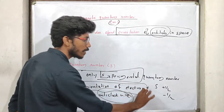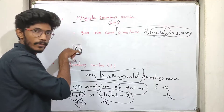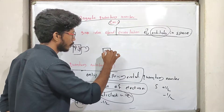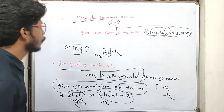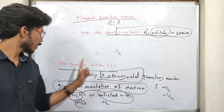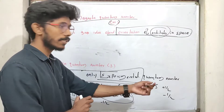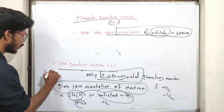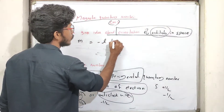The spin quantum number gives the spin orientation of the electron. We represent spin as plus half or minus half. The Magnetic Quantum Number (m) depends on the value of l — it ranges from minus l to plus l. The Spin Quantum Number s has the value plus or minus half. The Magnetic Quantum Number value depends on l.